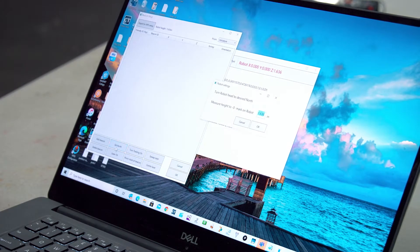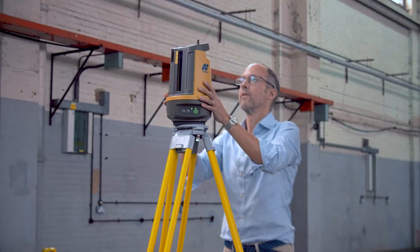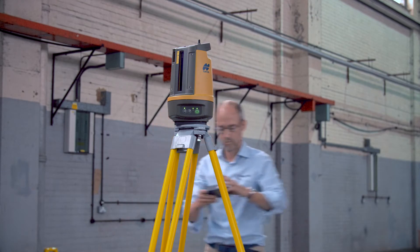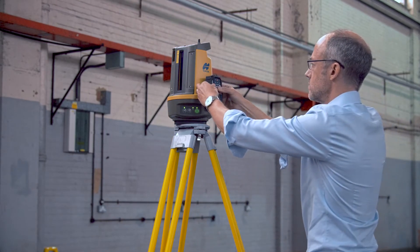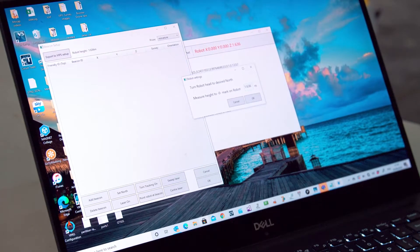Click on the button labelled Set North. Physically turn the robot head to point in the direction you wish to nominate as north to set the y-axis, and then measure the height of the robot to the ground. Enter this height into the pop-up box on the software and click OK.